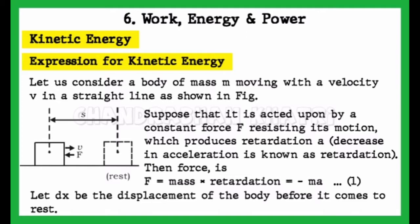Suppose that it is acted upon by a constant force F resisting its motion, which produces retardation. A decrease in acceleration is known as retardation. Then force is F = mass × retardation = -ma. This is equation 1.